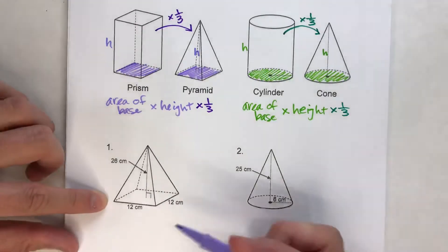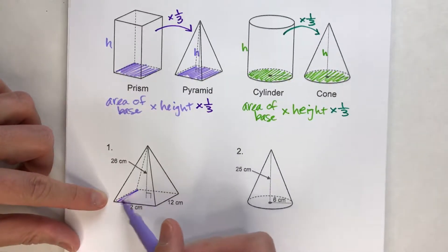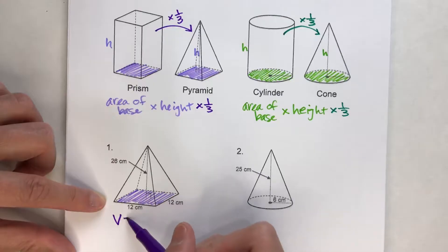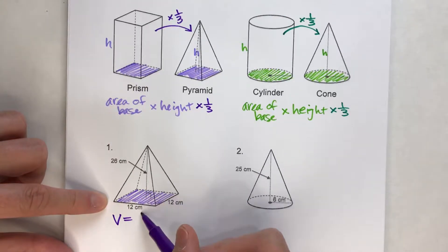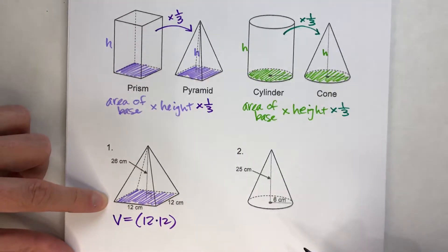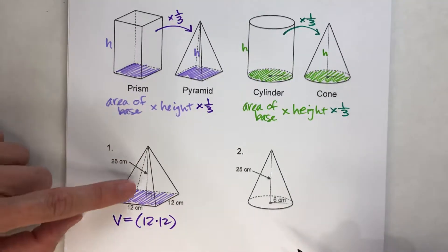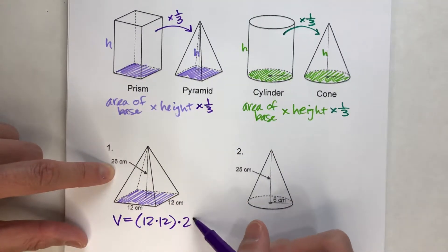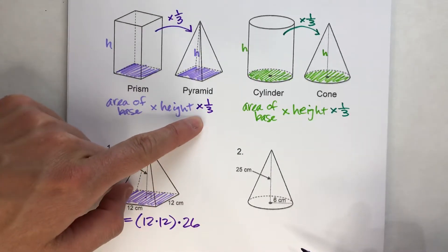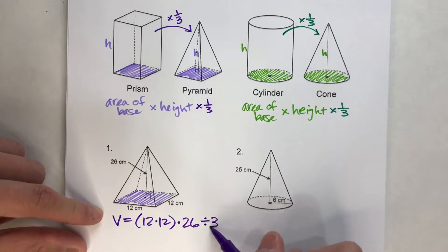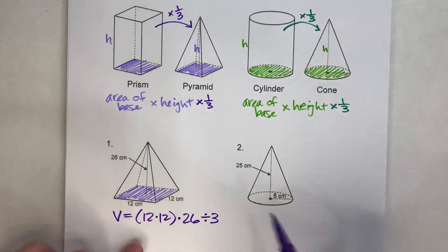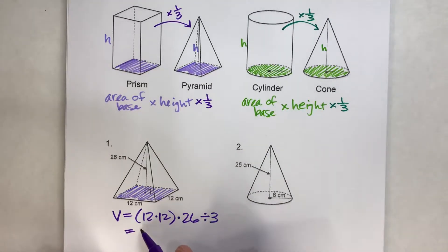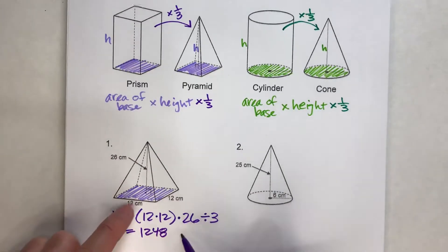Example one: we've got a pyramid where the base is a 12 by 12 square. To find the volume, we start by finding the area of the base: 12 times 12. Then we multiply by the height — the height from the very tip straight down to the bottom is 26. Then multiply by one third, or divide by three. On the calculator: 12 × 12 × 26 ÷ 3 = 1,248 centimeters cubed.